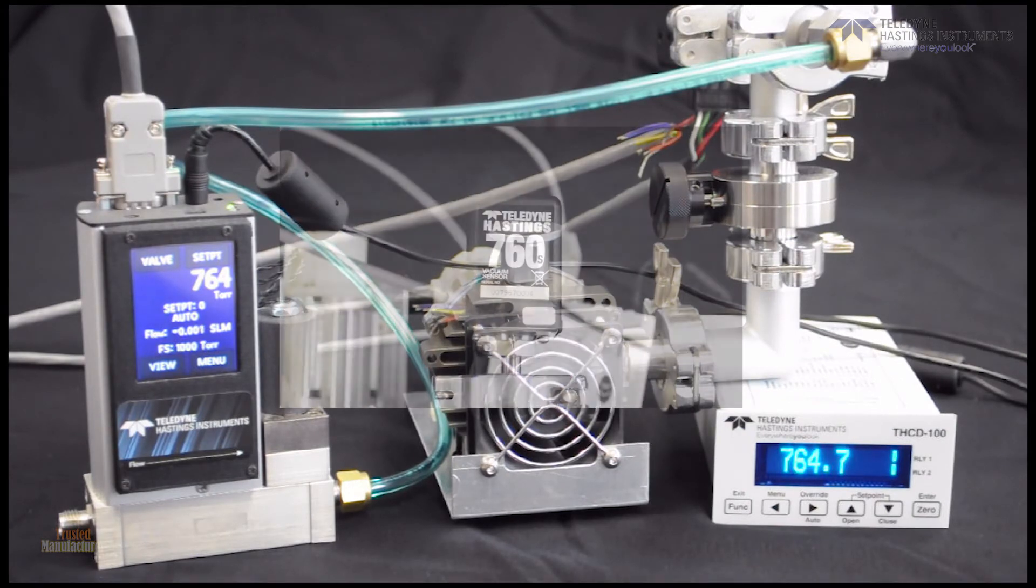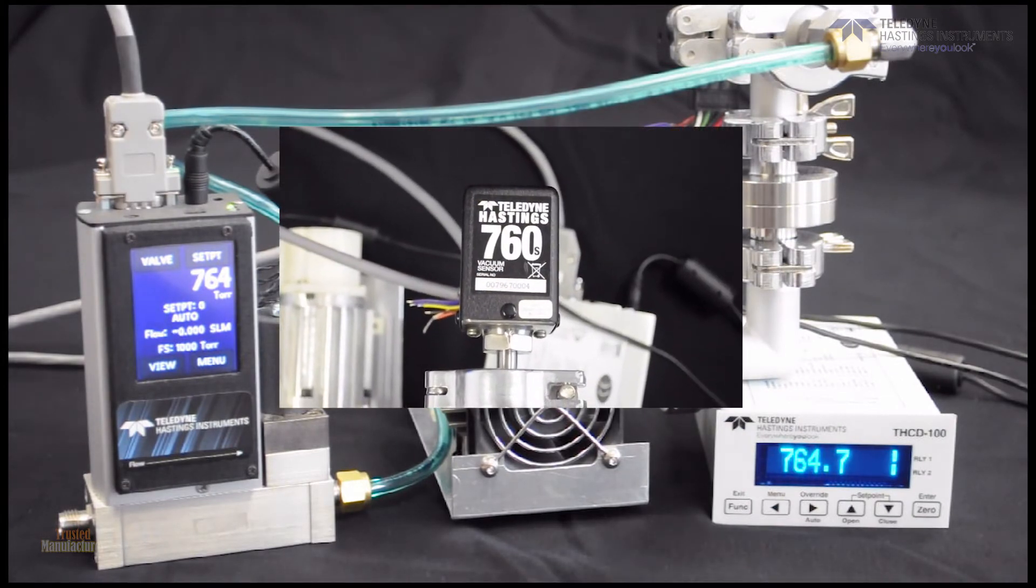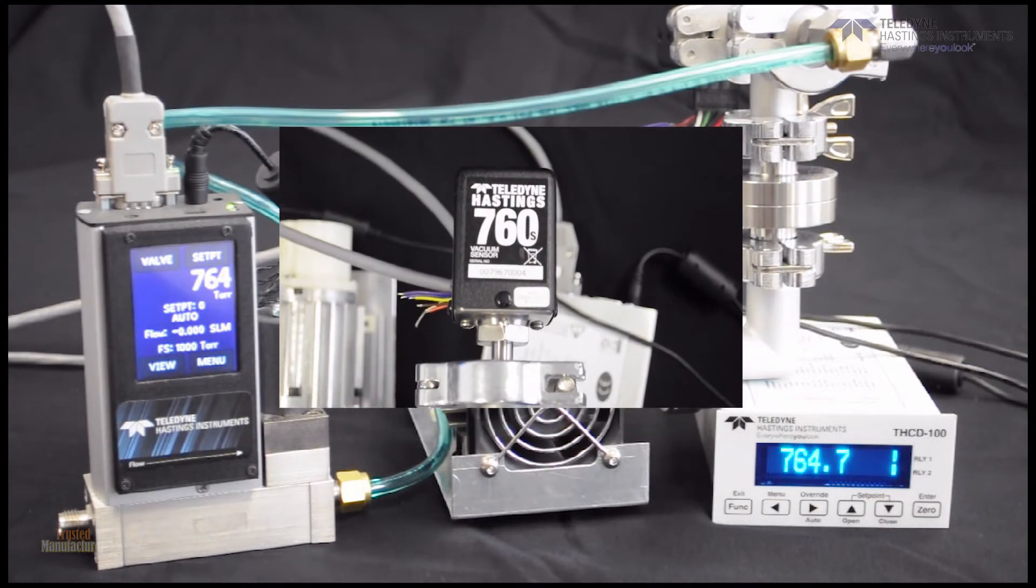I've also placed a small butterfly valve right here so I can quickly change the pumping speed. Now for our pressure signal, I'm going to use the Teledyne HPM760S vacuum gauge.